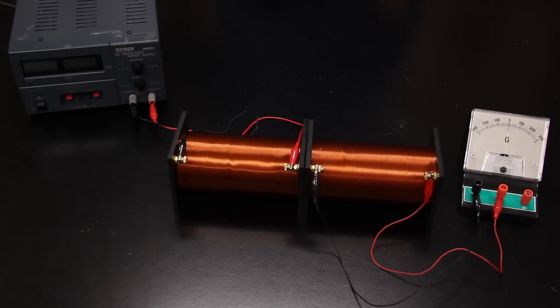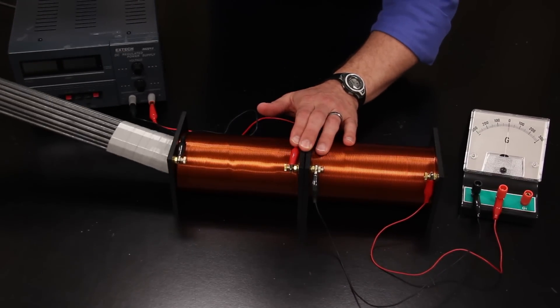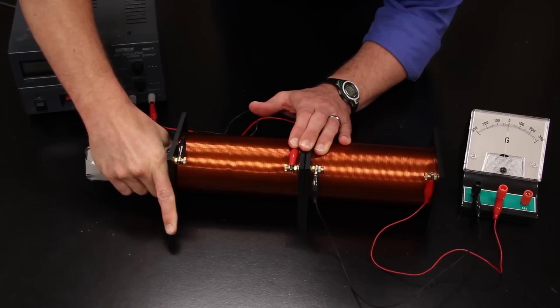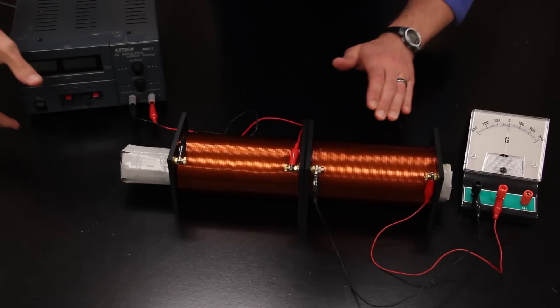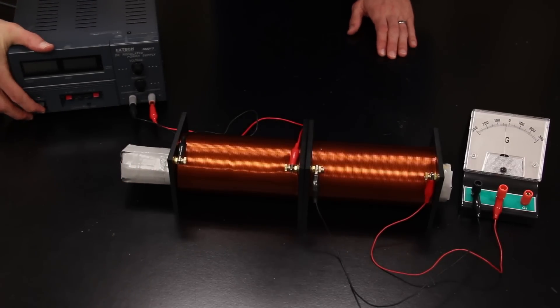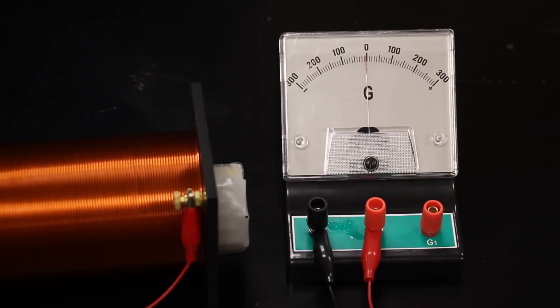The magnetic flux between the coils is greatly increased when a soft iron bar is added. This improves the efficiency of the transformer by strengthening the field and preventing it from diverging out and being wasted. Whoa! Much better!